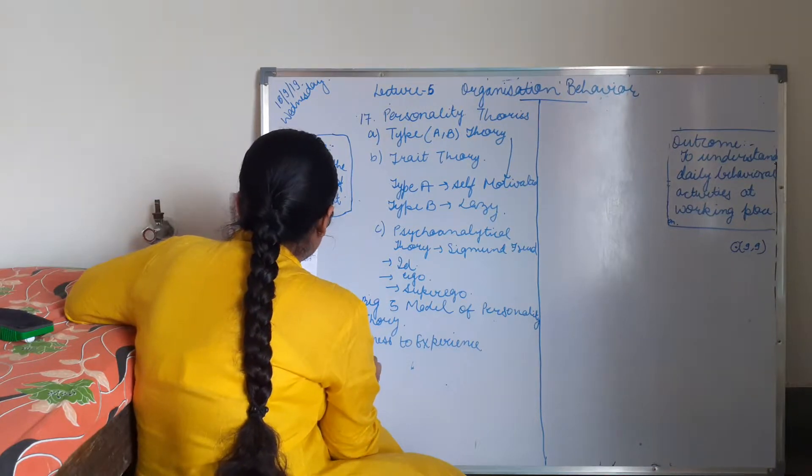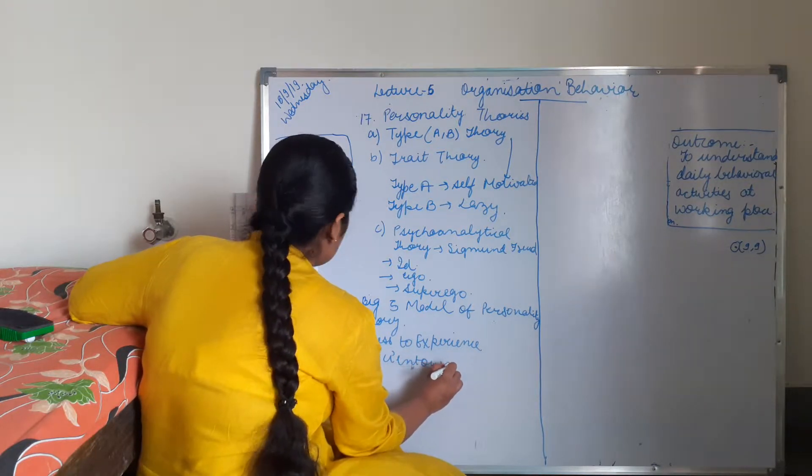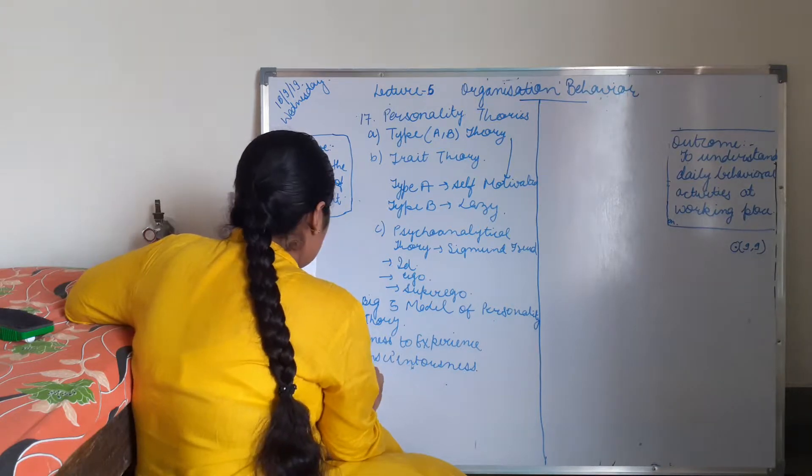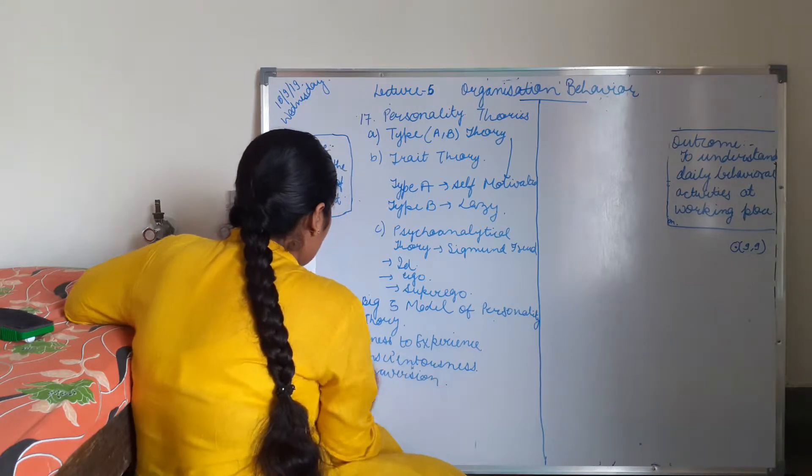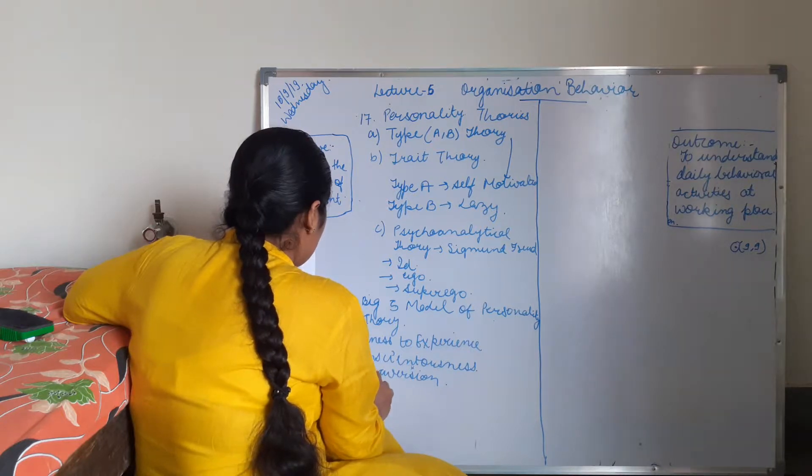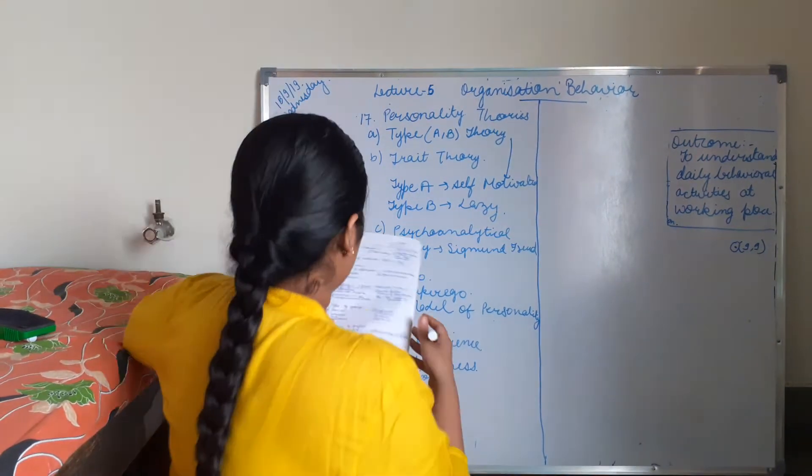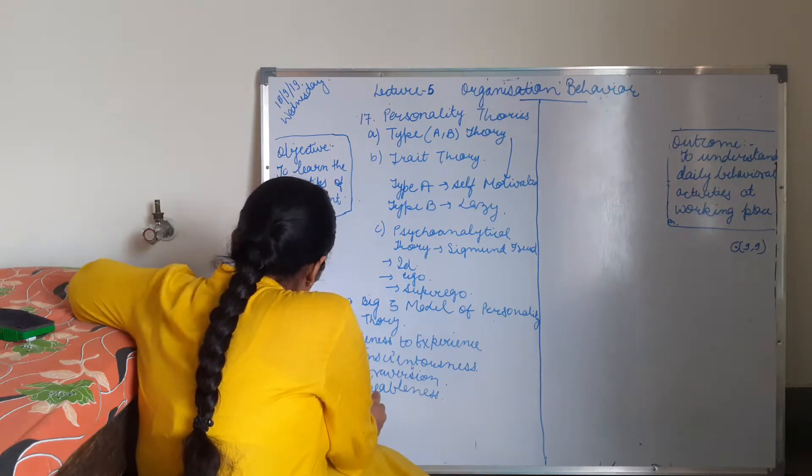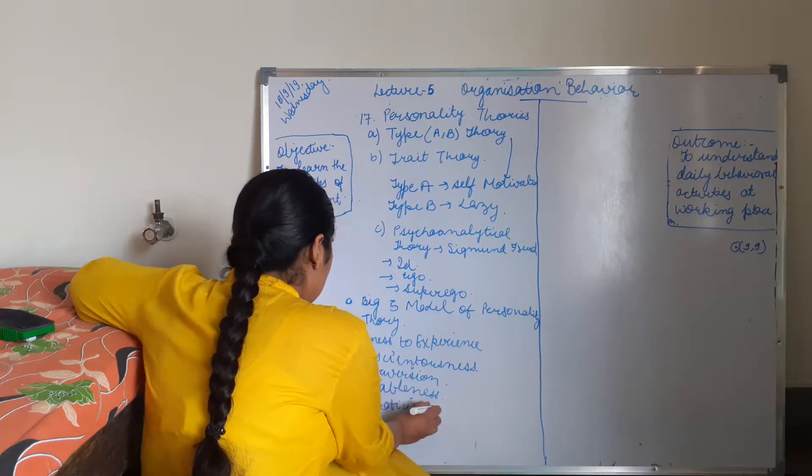B is Conscientiousness. Next, C is Extraversion. D is Agreeableness. And E is Neuroticism.